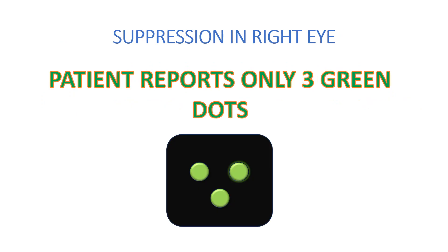The other possibility is suppression. This can happen when the patient has got a large manifest deviation and undergoes suppression. Say the patient has got suppression in the right eye — the patient will report only three green dots, which means the patient is unable to see the red color dot from the right eye. This is documented as right eye suppression.